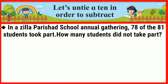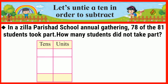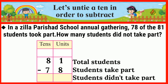In a Jilla Parisat school annual gathering, 78 of the 81 students took part. How many students did not take part? 81 minus 78 is equal to 3. So three students did not take part in the school gathering.